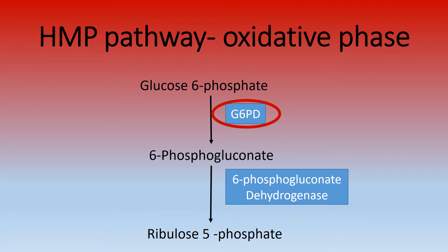Hexose monophosphate pathway: here are the oxidative or irreversible steps of the hexose monophosphate pathway. The step catalyzed by glucose-6-phosphate dehydrogenase (G6PD) is the rate-limiting step of this pathway. As the insulin to glucagon ratio decreases, that enzyme activity is reduced and the pathway is suppressed.